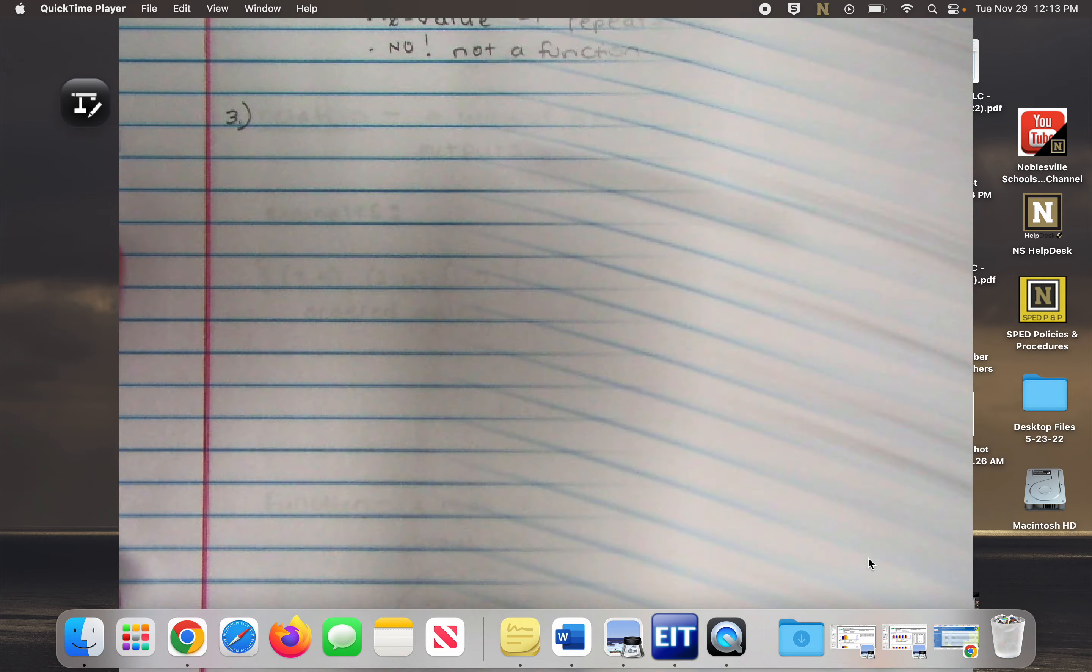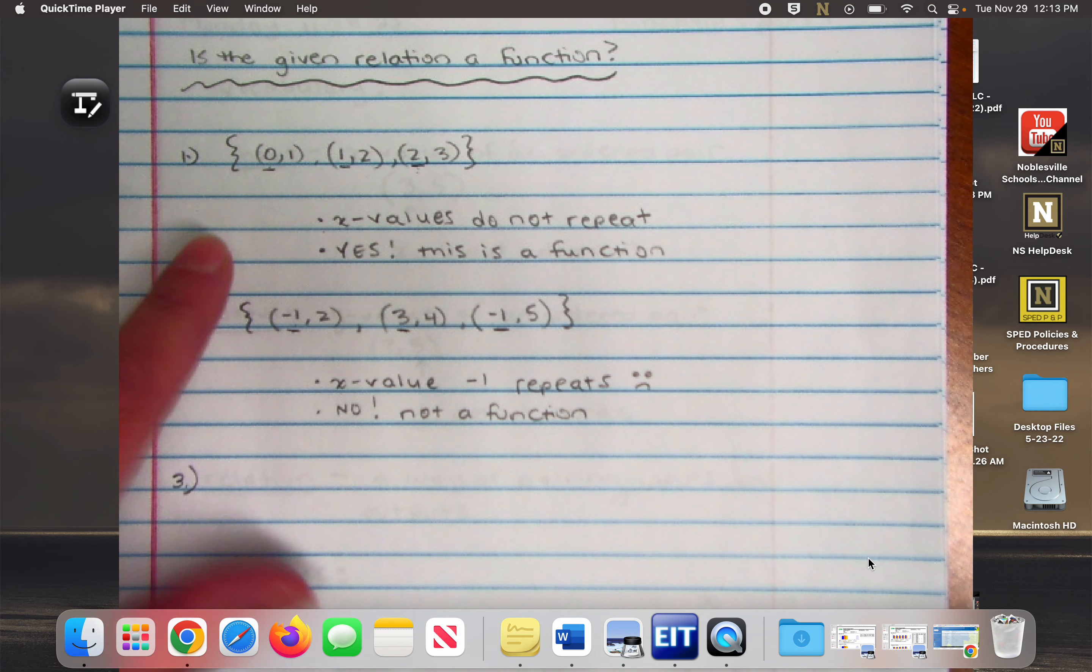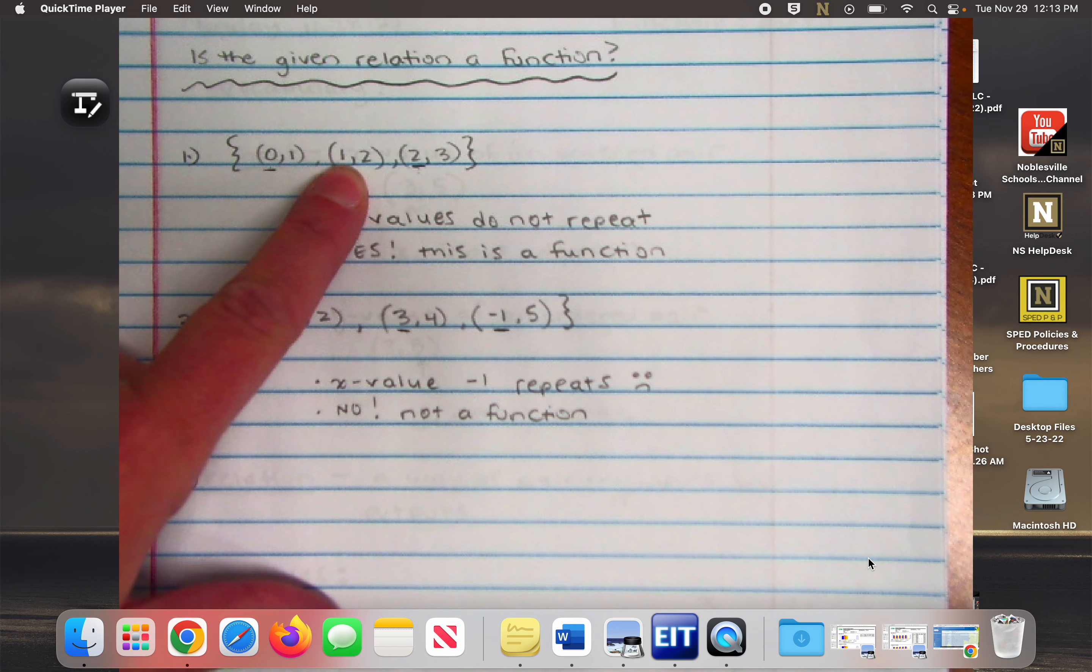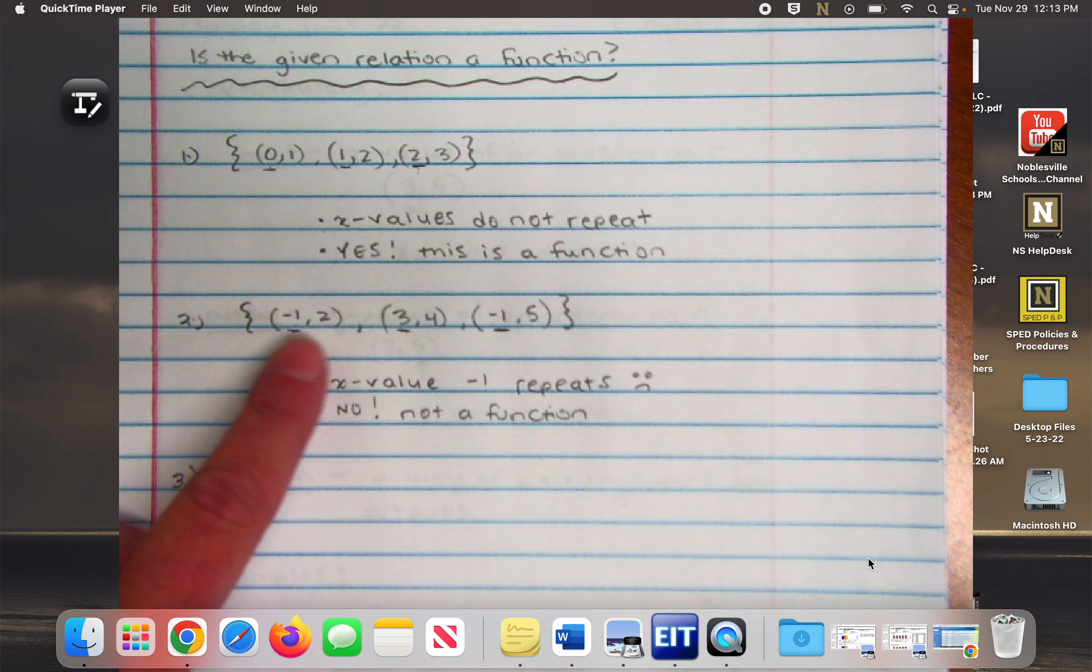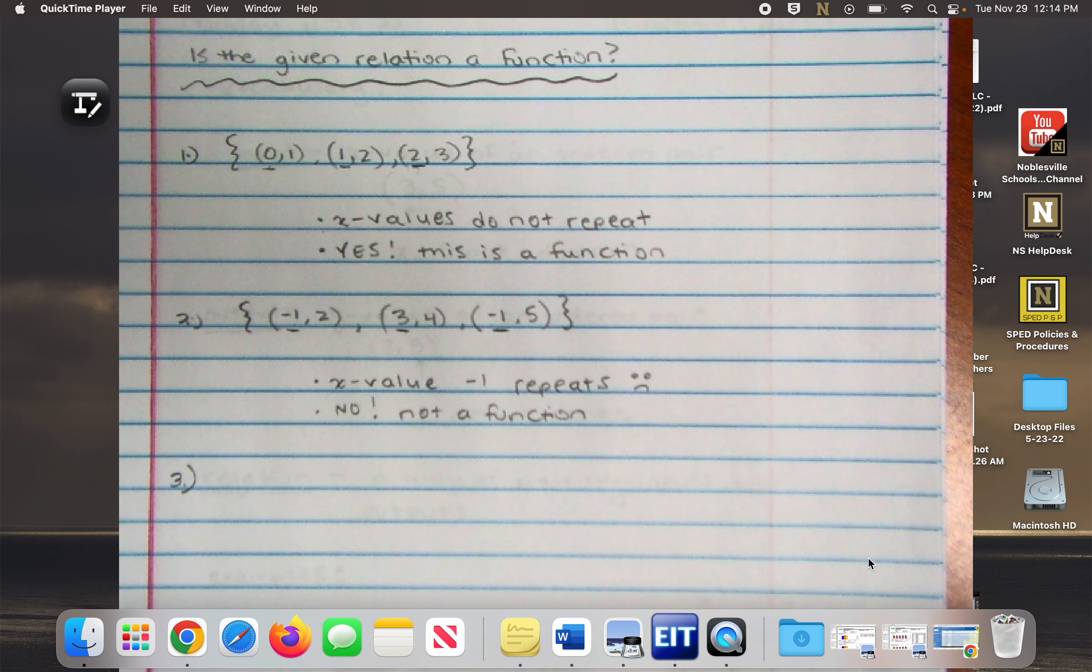So then we had a couple of examples, right? We decided, for example one, that this is a function because none of my X values repeat. Example two, this was not a function because the X value negative one repeats.